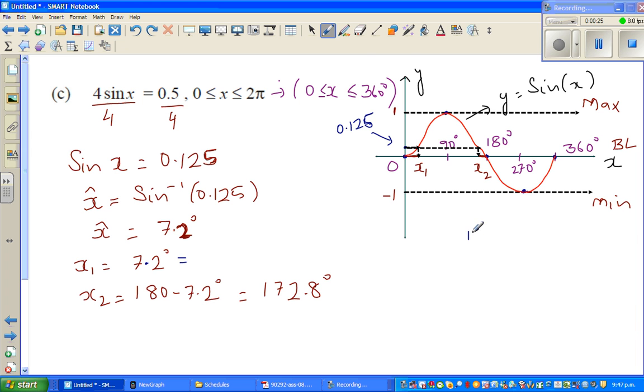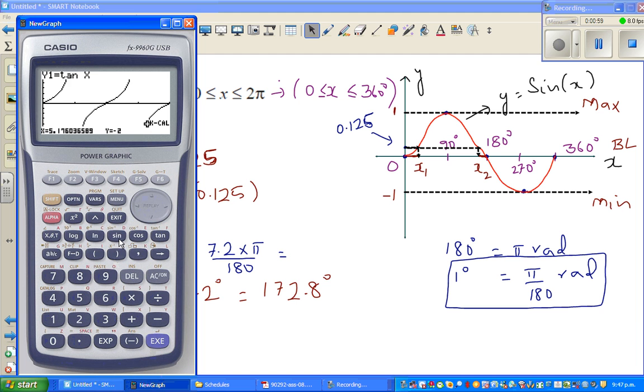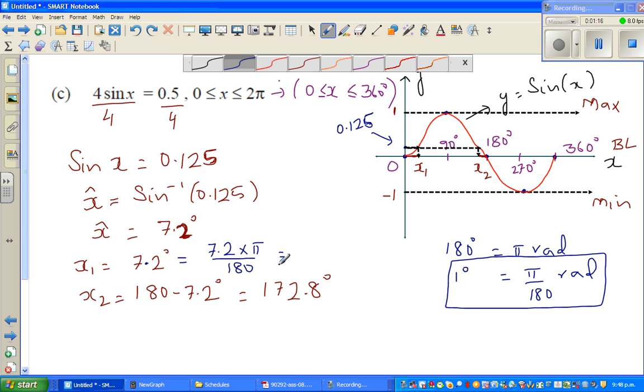The rule is you should be knowing that 180 degrees is π radians. So 1 degree is π by 180 radians. This is a simple rule. So this is nothing but 7.2 times π over 180. This is 7.2 π divided by 180, which is 0.12 or 1.3 in 2 decimal places. This is same as 172.8 π over 180.